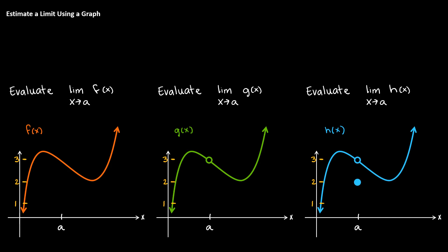We have three different functions on the screen, and they're all very similar but slightly different. Notice that the function f of x has no missing points. The function g of x does have the point a,3 missing, and the function h of x, it looks like the point that's supposed to be at a,3 has been punched out and relocated to a,2.